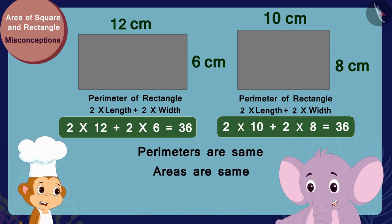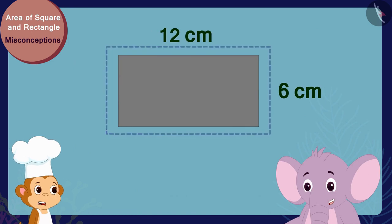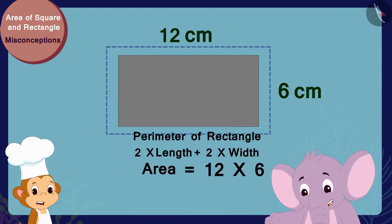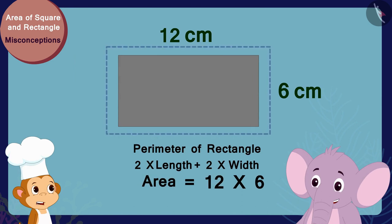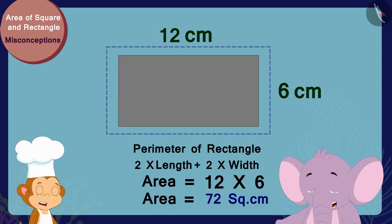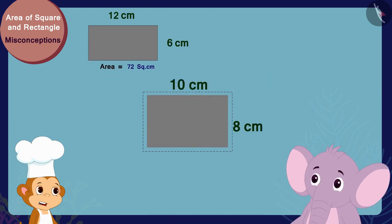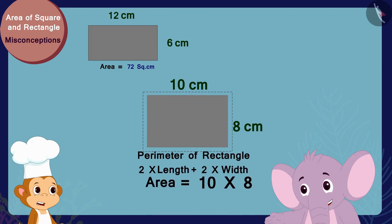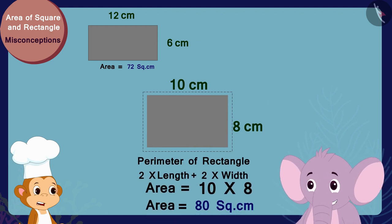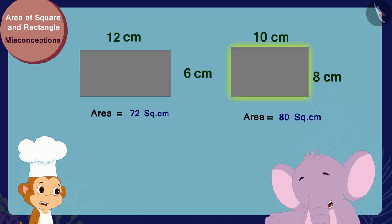Look, the area of this rectangle shaped tray will be 12 times 6, or 72 square centimeters. And the area of this rectangle shaped tray will be 10 times 8, or 80 square centimeters. So this tray is bigger than this tray. Understood?